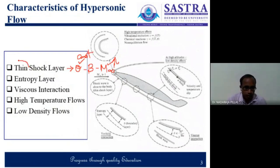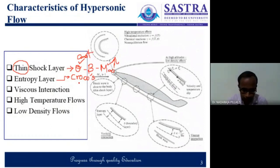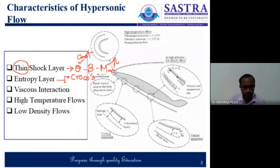Then comes the entropy layer. In the entropy layer, we had a discussion on Crocco's principle. Crocco's principle says that the change in entropy will lead to vorticity. Then we found that the interaction of vorticity — we call this as vorticity interaction.